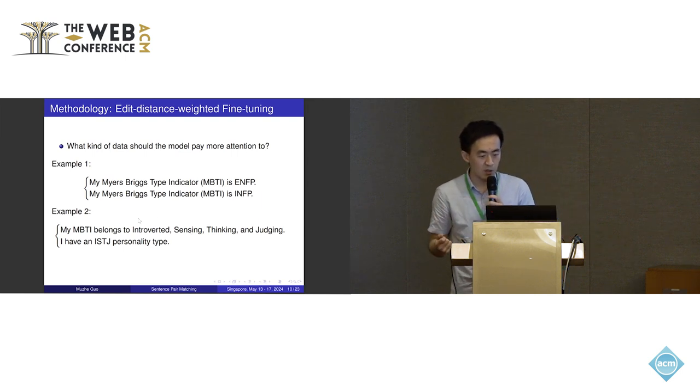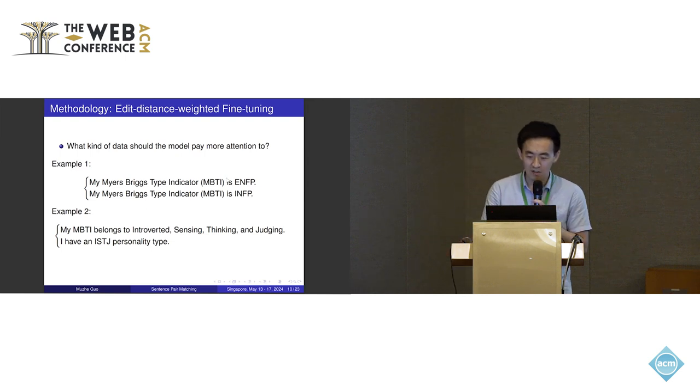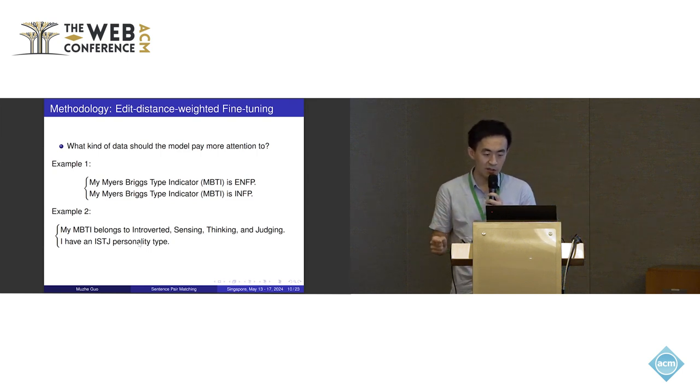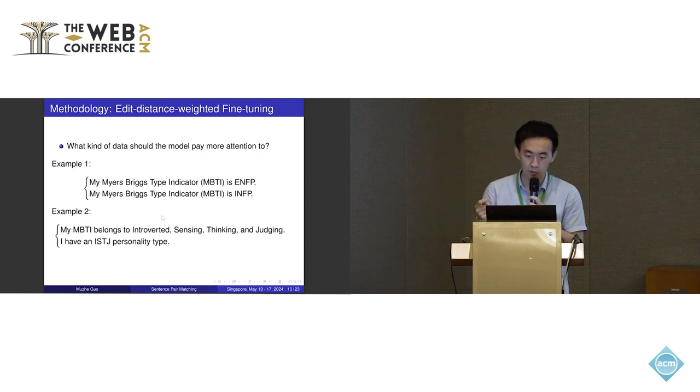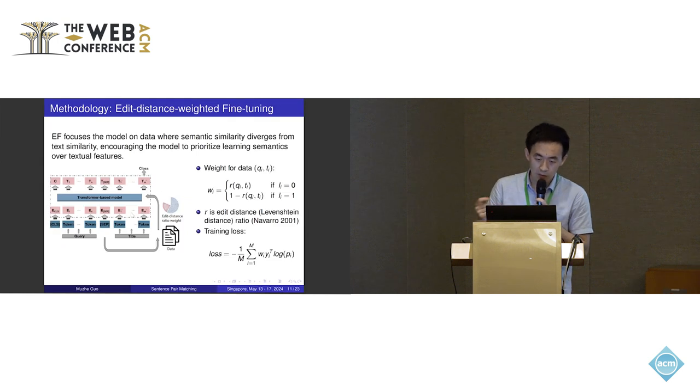And what kind of data should the model pay more attention to? Here are two examples. For example, 'My MBTI is ENFP. My MBTI is INFP.' Even though there is only one letter difference in the two sentences, the meanings are totally different. And example two also, even though the textual features of the two sentences are totally different, they have the exact same meaning. Those kinds of data are very difficult for the model to learn, so the model needs to pay more attention to them.